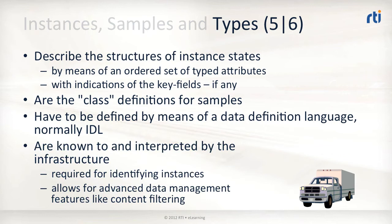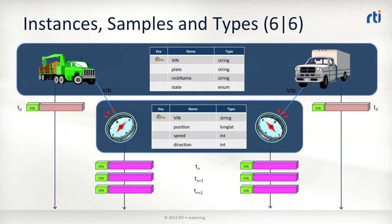This content awareness is an important distinction when comparing DDS to many other data distribution infrastructures. This slide visualizes the concepts in one picture, again using the truck example. We see a picture with four observable items — the instances — which are a green truck, a white truck, and for each of those, a device that measures position, speed, and direction.